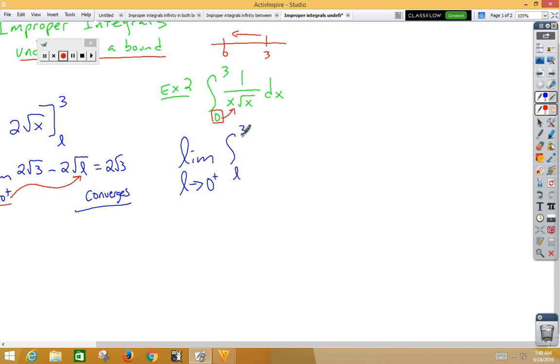Now, we're going to have to do a little algebra here. 1 over x root x can be thought of as 1 over x to the 3 halves because x to the first times x to the 1 half would be x to the 3 halves. And since that's on the bottom, let's move it to the top and think of it as x to the negative 3 halves.